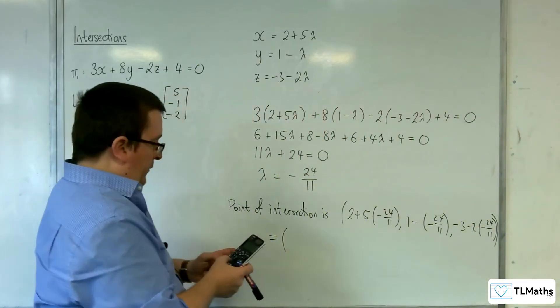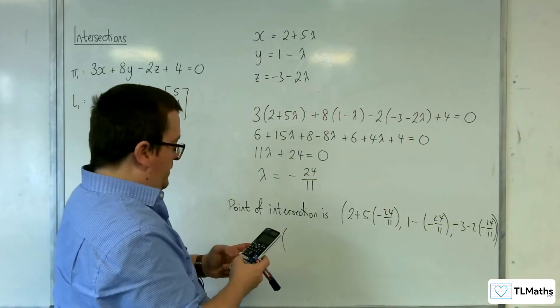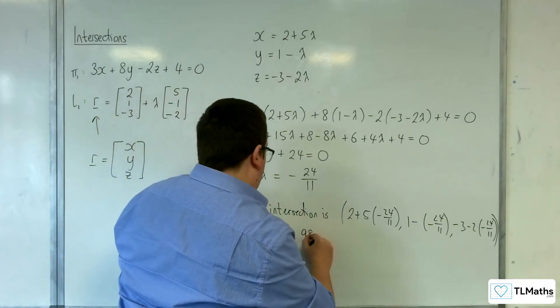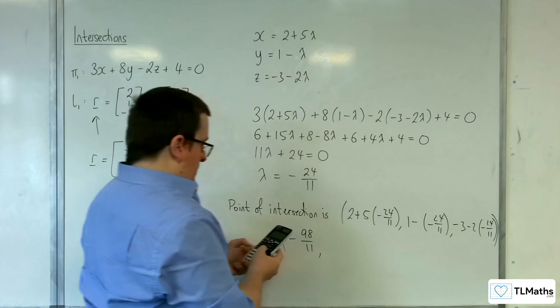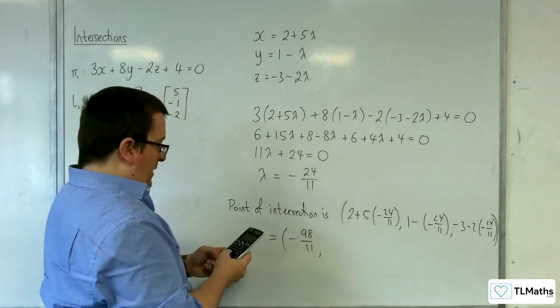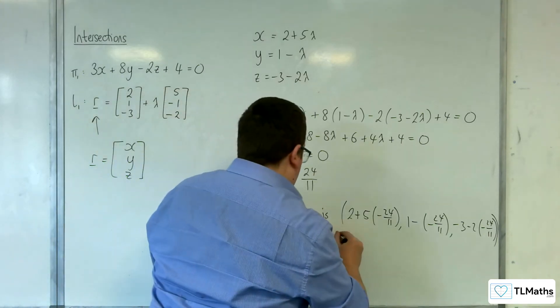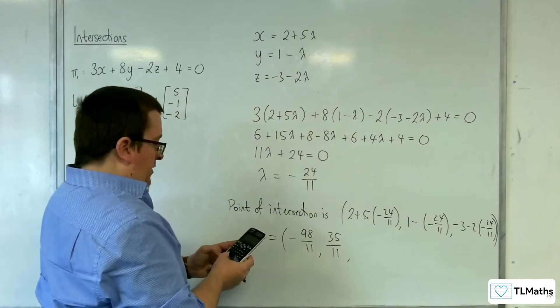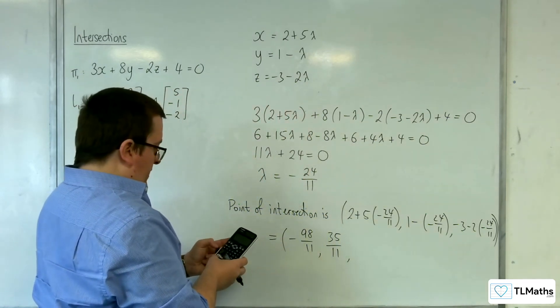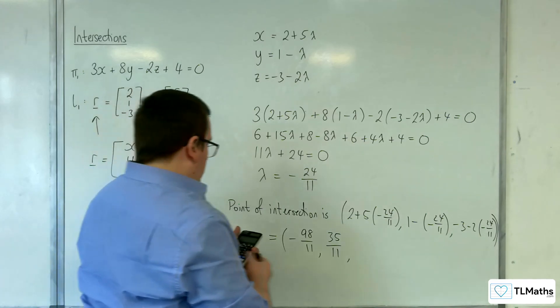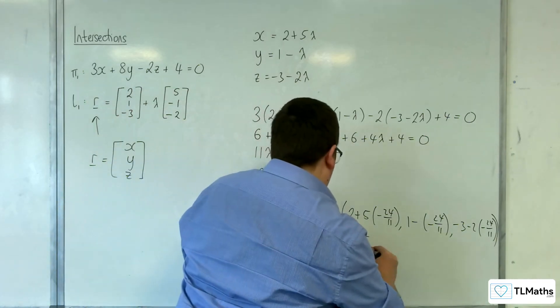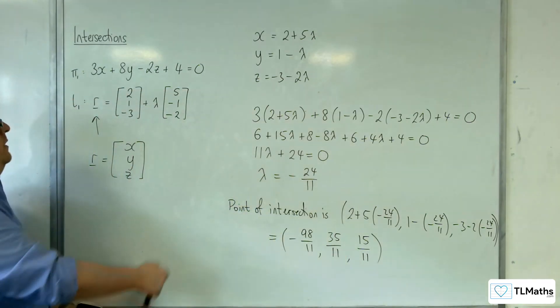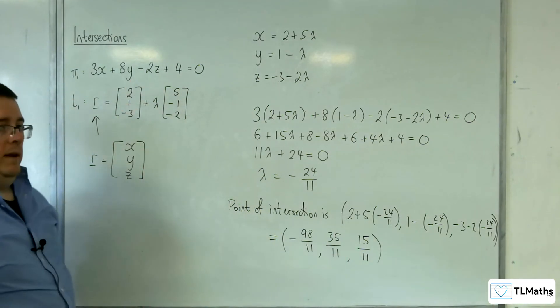So 2 plus 5 lots of minus 24 11ths, 1 plus 24 11ths is 35 11ths. And then minus 3, take away 2 lots of minus 24 elevenths is 15 elevenths. So this is the point of intersection of the line and the plane.